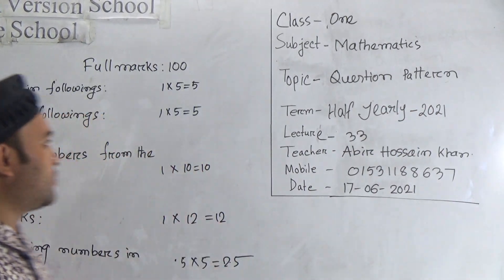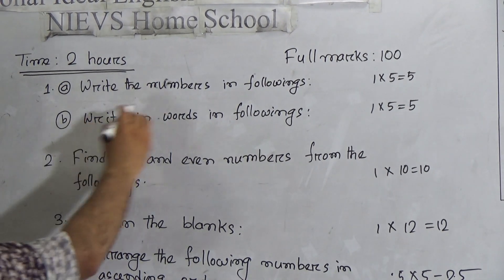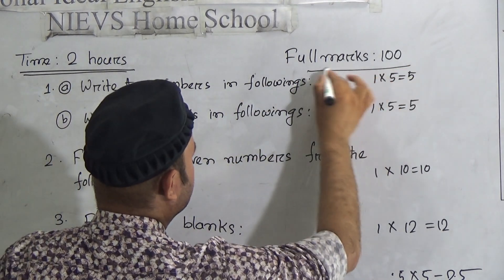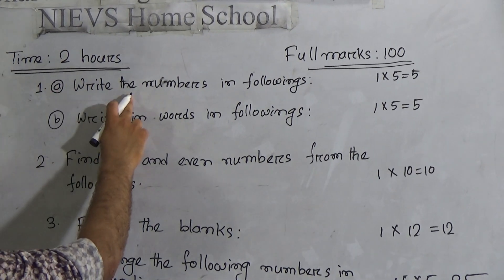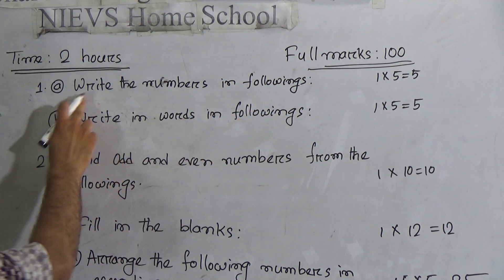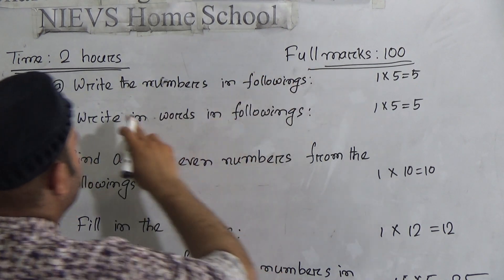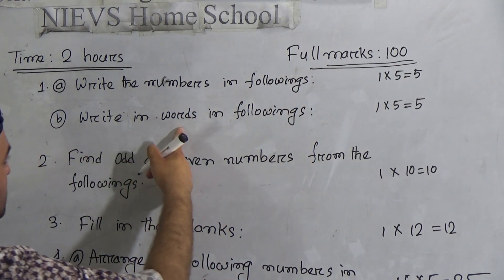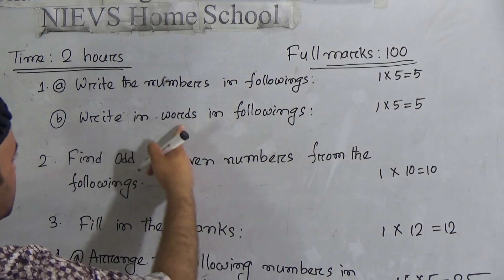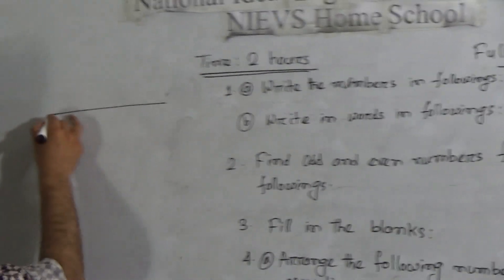In your exam there is a time of two hours and the full marks is 100. Question number one: write the numbers in the following. Write the numbers in following. Then you have to write some numbers. Write in words in the followings. Here is the page of your exam.